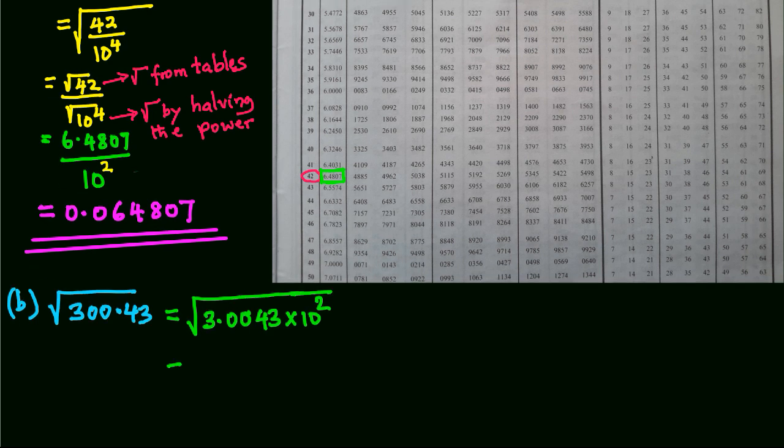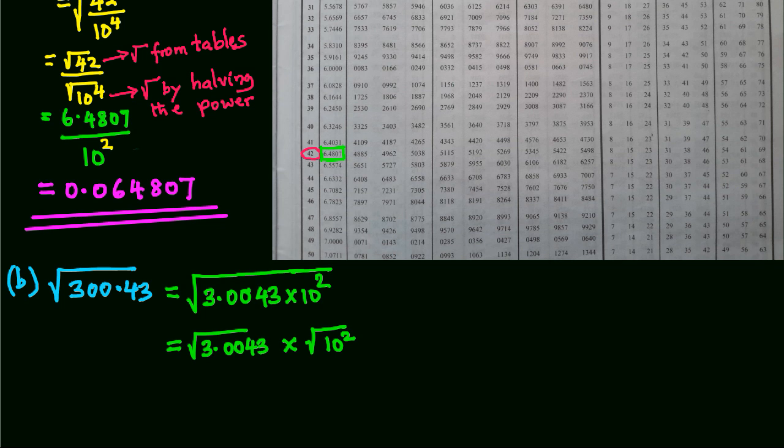We can split this to root of 3.0043 times root of 10 power 2. This part we read from tables, and we get square root by halving the power.